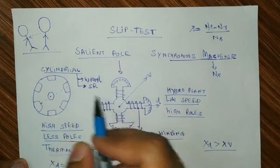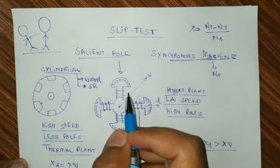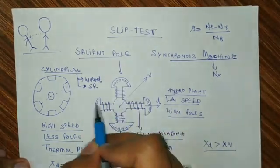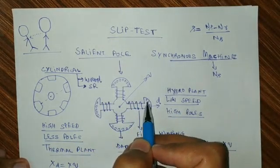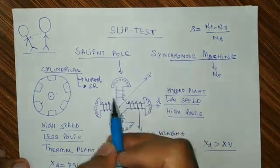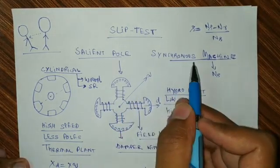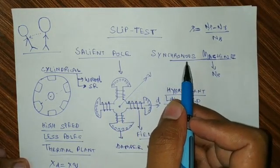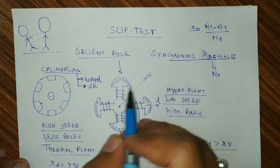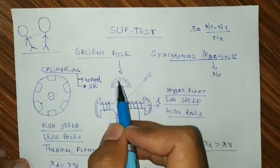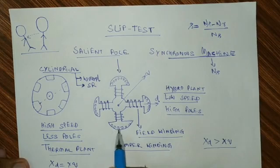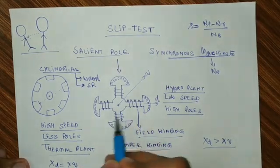This is cylindrical rotor construction and this is what I am talking about — a salient pole rotor. It is not cylindrical but saliency is there like in our fan. In this type of rotor, because it is used in synchronous machines, to start the synchronous machine we have two options: to use damper winding which starts it as an induction machine. These are the damper windings and these are the main field windings in this type of rotor.